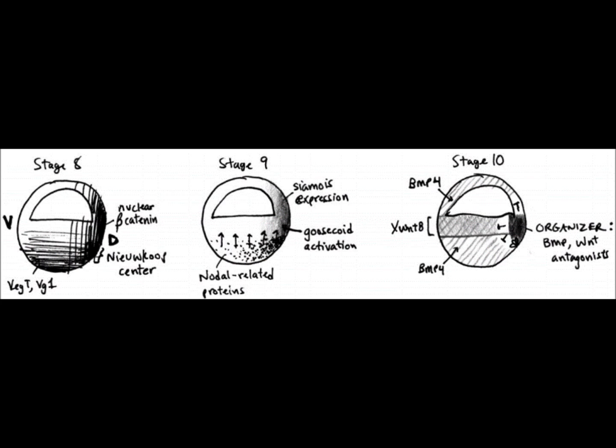Interestingly enough, looking at stage 10, the organizer actually expresses Wnt antagonists, which is Frisbee, and also BMP antagonists. This can seem a little contradictory but it can be explained by the timing of events in the developing Xenopus embryo.